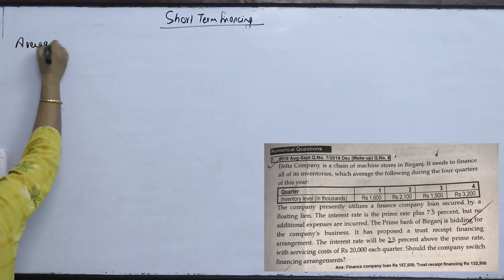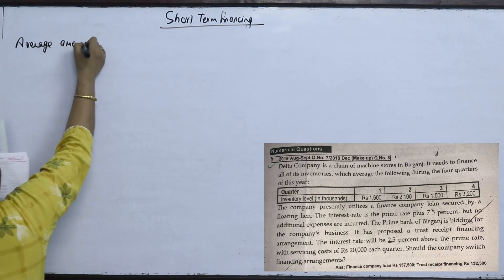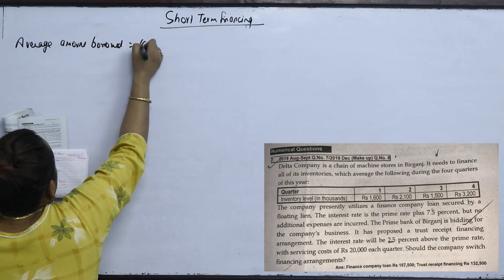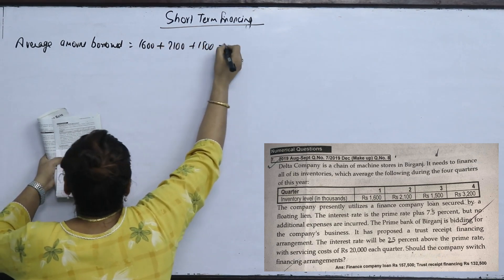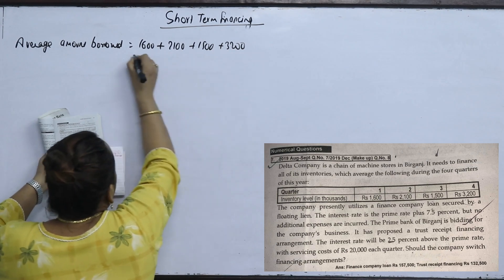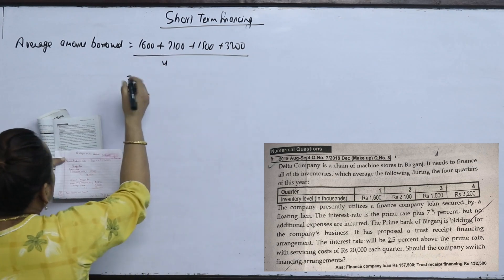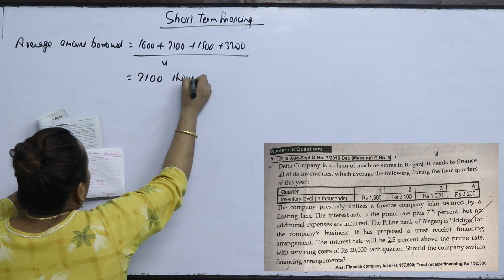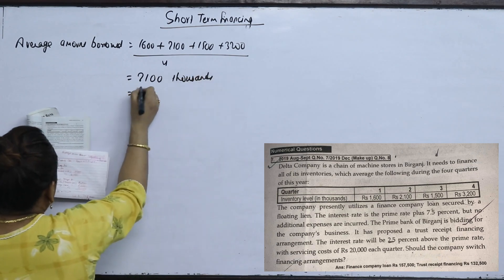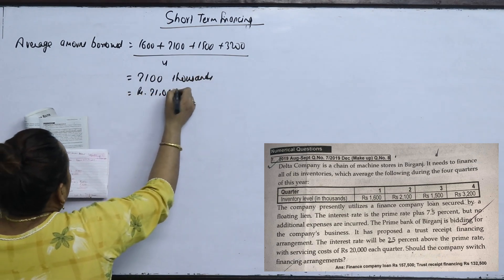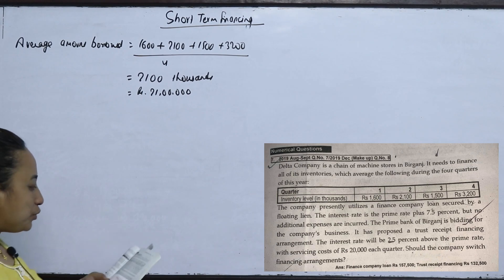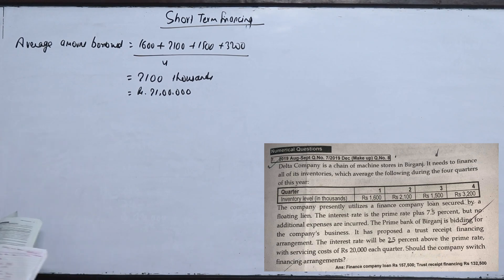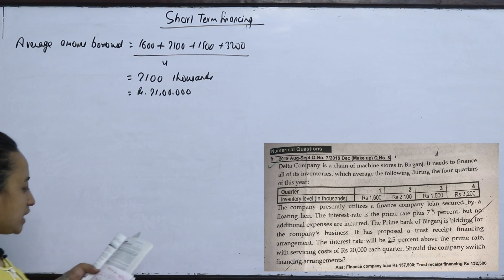The average amount borrowed is: 1,600,000 plus 2,100,000 plus 1,500,000 plus 3,200,000 divided by 4, which equals 21,000,000. So the average amount borrowed is 21,000,000.